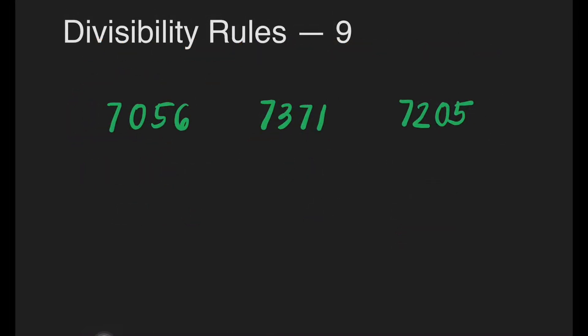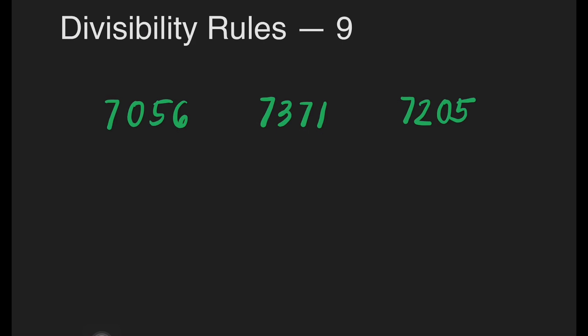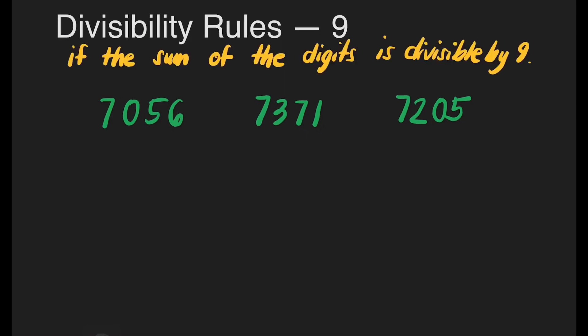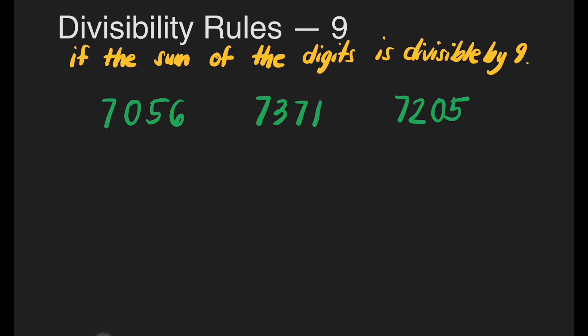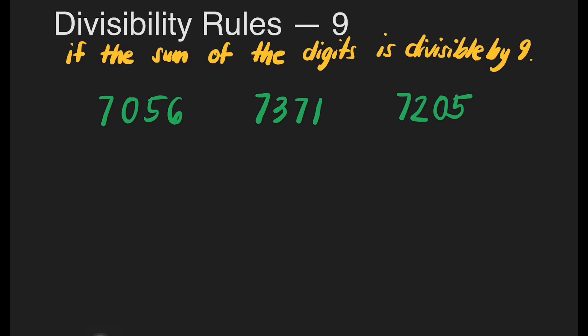Now we have divisibility rules for 9. We will know that a number is divisible by 9 if the sum of the digits is divisible by 9 — just like divisibility rules for 3, but checking if the sum is divisible by 9. Let's start with the first number: 7 plus 0 plus 5 plus 6. 7 plus 0 is 7, plus 5 is 12, plus 6 is 18. 18 divided by 9 is 2 with no remainder. So 7,056 is divisible by 9.